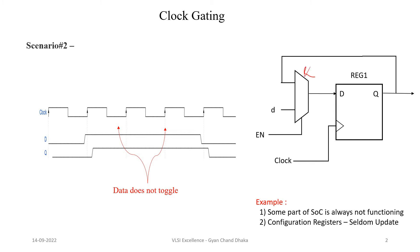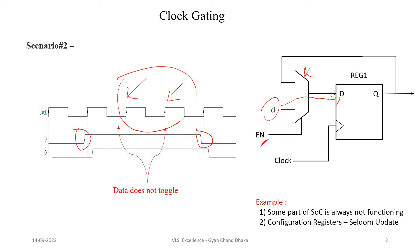Now let's see another scenario. This is a flip-flop circuit with an input mux. Whenever the enable signal is high, the new data will be passed to the flip-flop input signal. And whenever the enable signal is low, the same data which is present at the output will be going as input to the flip-flop. If we see the waveform, the new data is basically toggling at two places. So again, if we do not apply these two clock cycles to the flip-flop, our flip-flop output is not going to change.